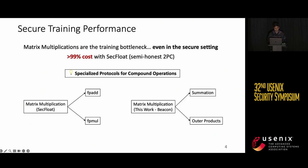The matrix multiplication beacon, instead of reducing to fp and fpmull, reduces to summations and outer products. And we give specialized protocols for both of these compound operations. As a concrete example, for a matrix multiplication of 100 cross 100 matrices, we get a 5.5 times improvement by taking this approach with summation as opposed to just doing summation naively with floating-point addition. And similarly, we get a 3.5 times improvement for outer products. In the rest of this talk, I'll be focusing on the improvements we made to summation because floating-point addition was the real bottleneck in prior work.